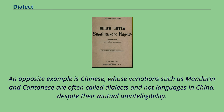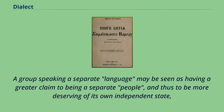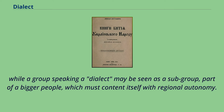An opposite example is Chinese, whose variations such as Mandarin and Cantonese are often called dialects and not languages in China, despite their mutual unintelligibility. National boundaries sometimes make the distinction between language and dialect an issue of political importance. A group speaking a separate language may be seen as having a greater claim to being a separate people and thus more deserving of its own independent state, while a group speaking a dialect may be seen as a subgroup that must content itself with regional autonomy.